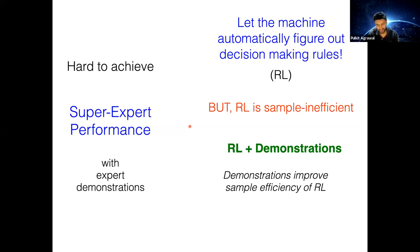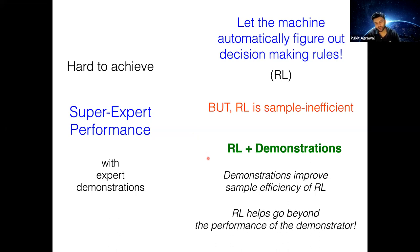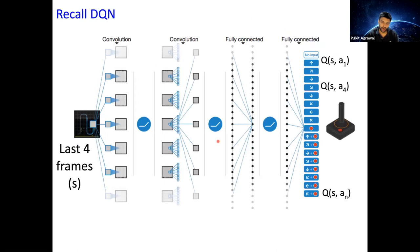Demonstrations improve sample efficiency of RL. Intuitively, demonstrations solve the exploration problem because they get you close to the goal — though they may not tell you the optimal path. Starting RL from scratch means random actions, but with demonstrations you overcome that hump of random actions and do something meaningful, getting close to the goal. RL, on the other hand, can help us go beyond the performance of the demonstrator.